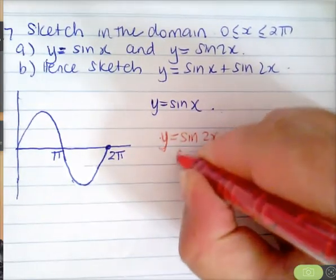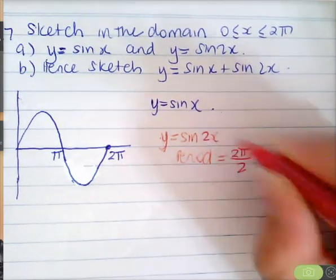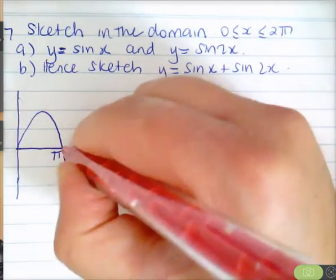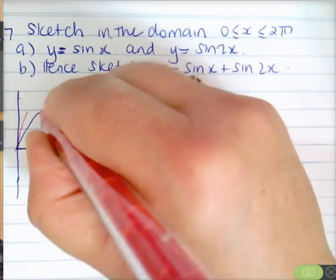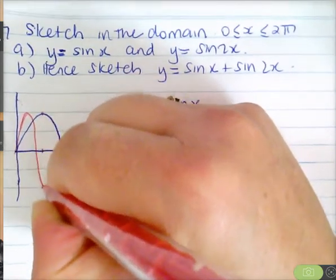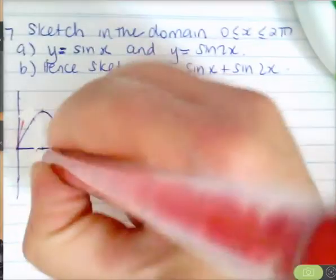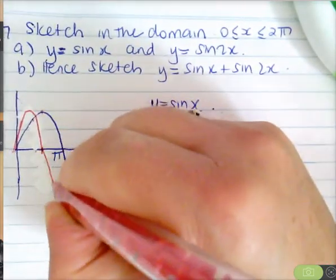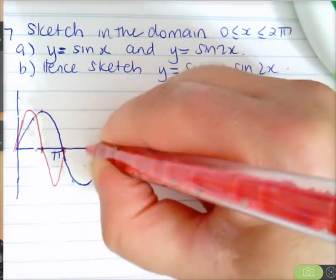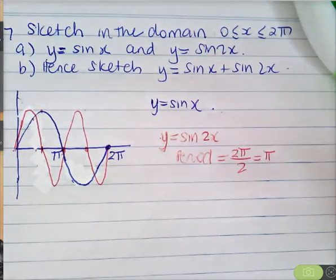Now remember y equals sine 2x — the period is 2π on 2, so period is 2π divided by the coefficient of x, which is 2, so the period is π. We will basically fit the curve in by the time we get to π. So we go up there and down, and down and up. That's the halfway mark. So in red I've got y equals sine of 2x. The amplitude of both these curves is 1.